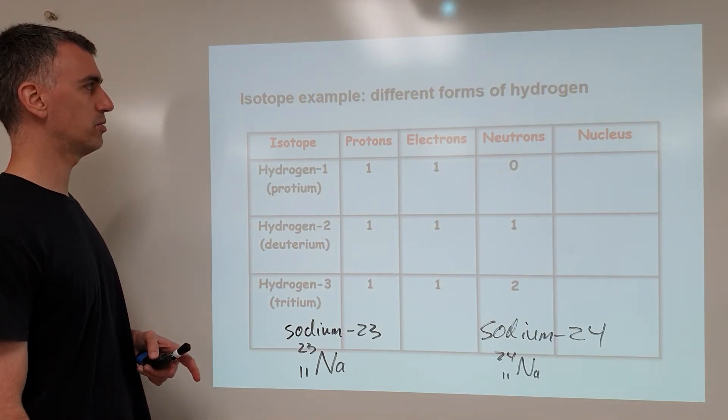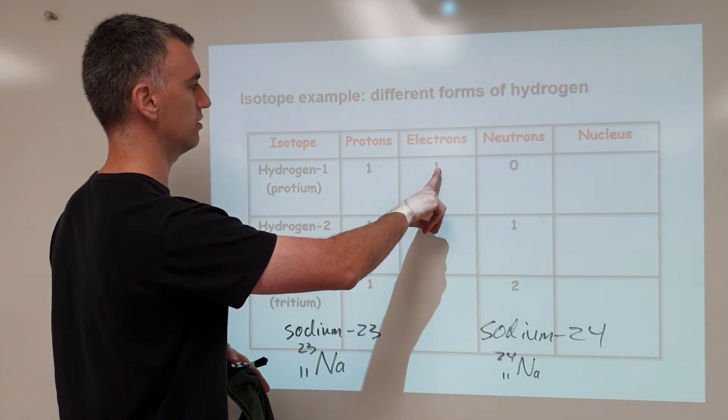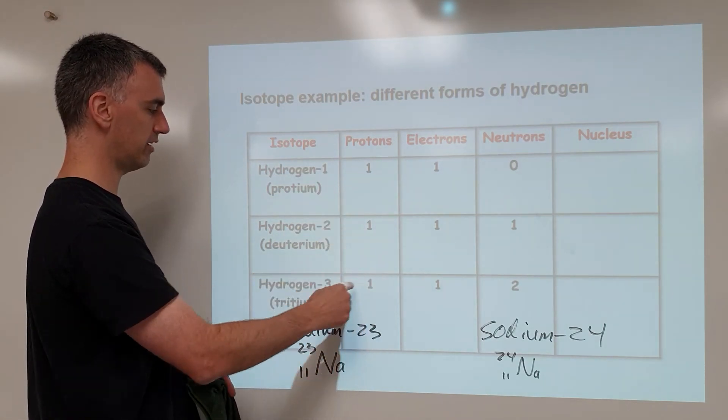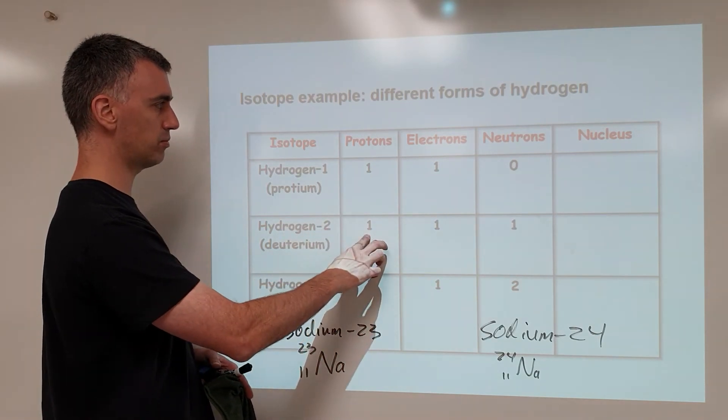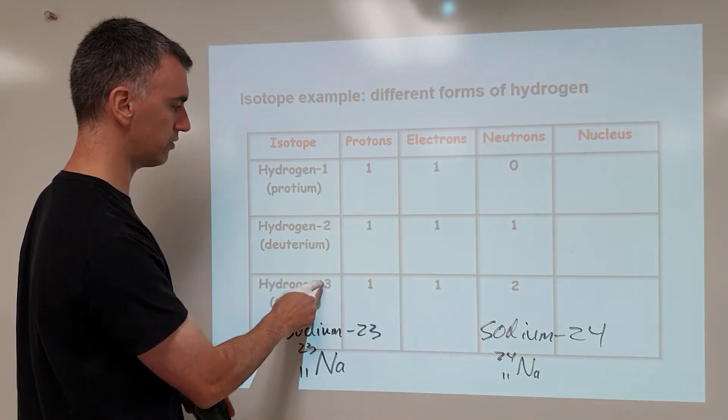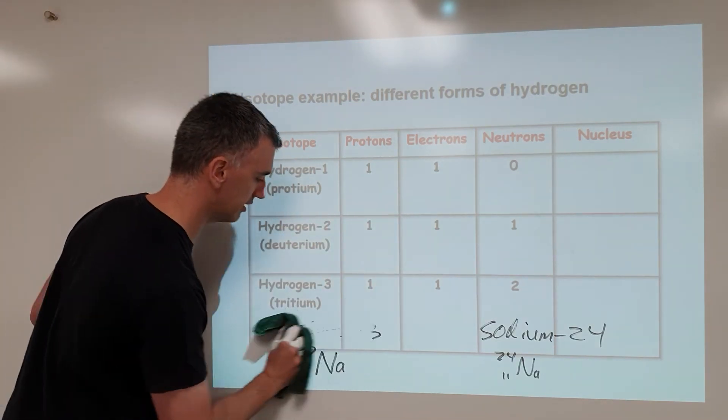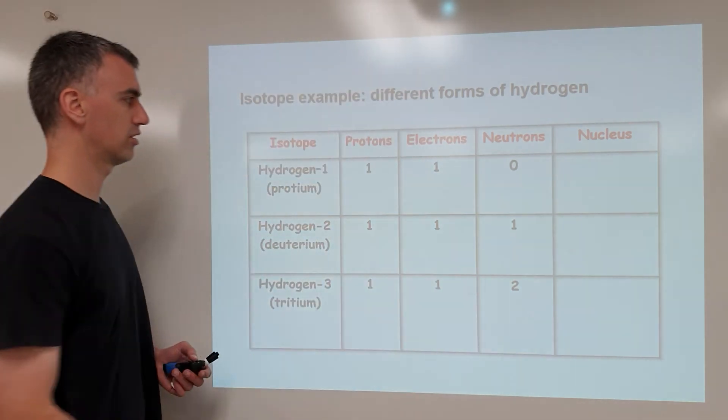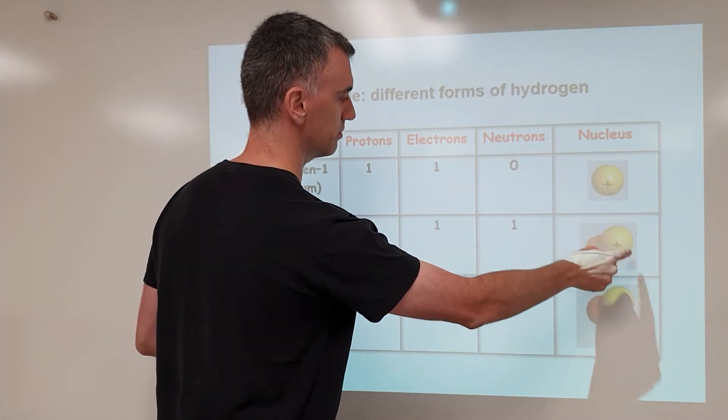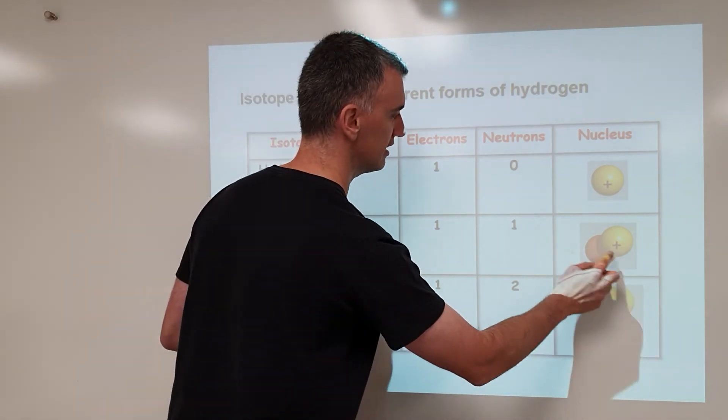And then another isotope example is different forms of hydrogen. Hydrogen 1, aka proteum, has one proton, no neutrons, and one electron. Hydrogen 2 is one proton—in fact, all forms of hydrogen are one proton—but hydrogen 2 is because you have one proton plus one neutron to make a total of two. Hydrogen 3, one proton plus two neutrons makes a total of three. And then because they're neutral, we assume the number of protons is equal to the number of electrons. They all have one proton, which makes them hydrogen. If they had two protons, they'd be a different element, helium. But if you change the number of neutrons, it's still hydrogen.